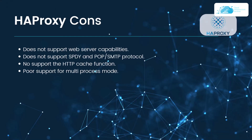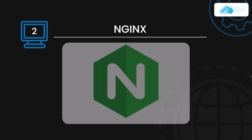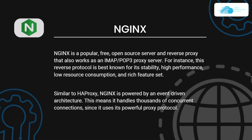At number two we have Nginx. Nginx is a popular free open source server and reverse proxy that also works as an IMAP or POP3 proxy server. It is best known for its stability, high performance, low resource consumption and rich feature set. Very similar to HAProxy, Nginx is powered by an event-driven architecture, which means it can handle thousands of concurrent connections without using too many resources.